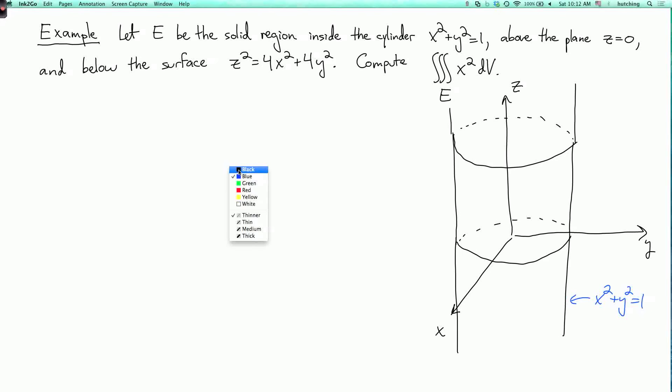Now do you remember what surface z-squared equals 4x-squared plus 4y-squared is? Well that's a cone, because all of the terms are quadratic. So the upper half of the cone looks like this.